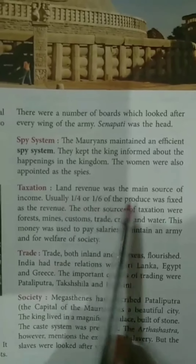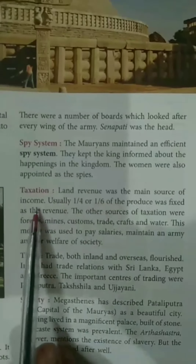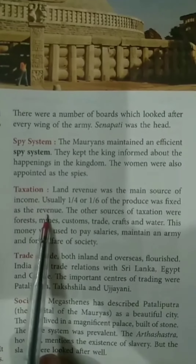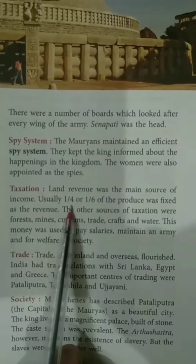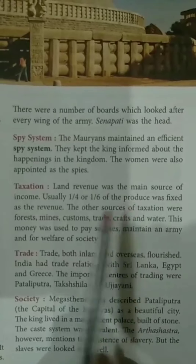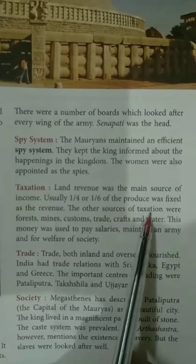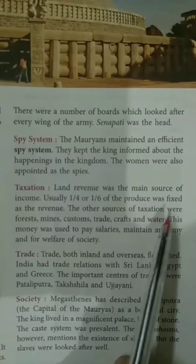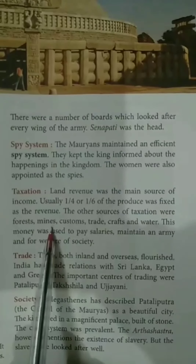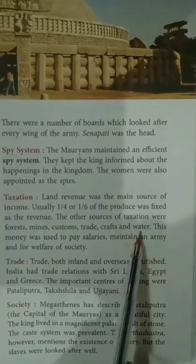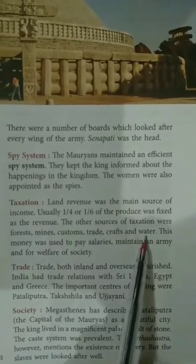The next topic is taxation. The main source of income was land revenue, which was usually one-fourth or one-sixth of the produce. Other sources of income besides land revenue included tax on forest, mines, customs, trade, crafts, and water.